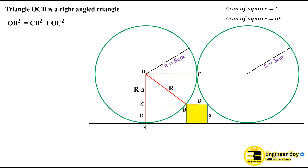ED splits the square in half, so we have a/2 there — half the side of the square. We subtract a/2 from the radius to get the base of the right angle triangle, which is CB. So CB equals r minus a/2.